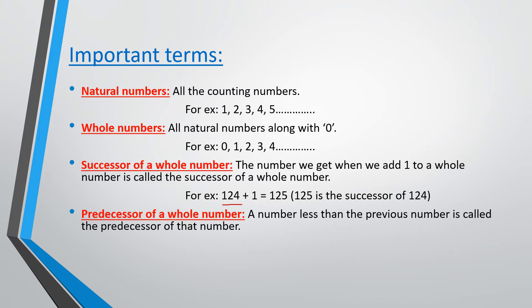What is the predecessor of a whole number? It is just quite the opposite of successor. Predecessor of a whole number is the number which comes before the whole number. Here the given whole number is 21 and what comes just before 21 is 20. So predecessor is nothing but 1 less than the given number, or the number which comes before the given number.